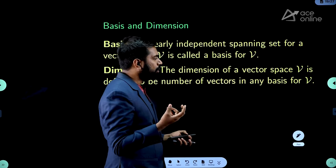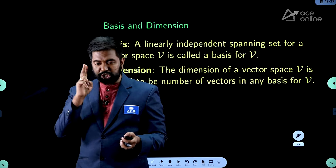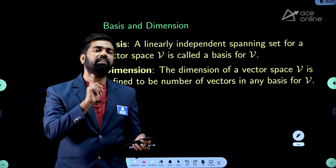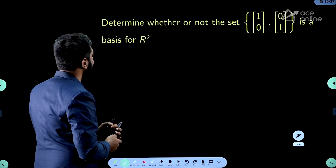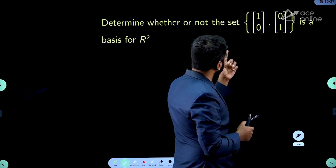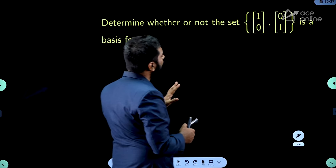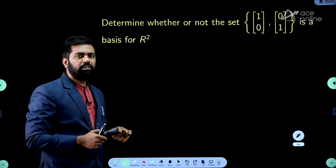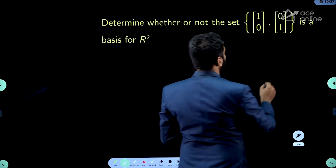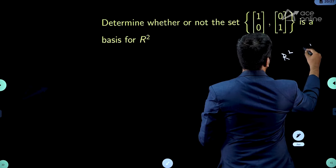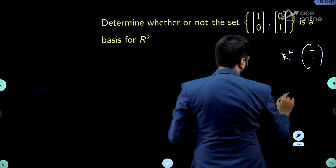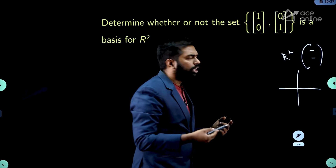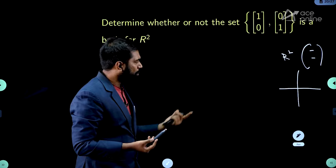To summarize, you need to check for linearly independent vectors and then they should also span the vector space. Here is the first example. I have two vectors 1,0 and 0,1, and I want to know whether these two vectors form a basis for R². R² is simply a two-tuple vector, or geometrically a two-dimensional space.